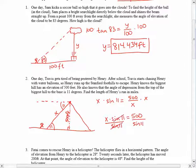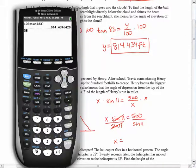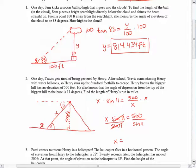So we get x equals 500 divided by the sine of 11. So we type that in our calculator. 2,620.421 feet.